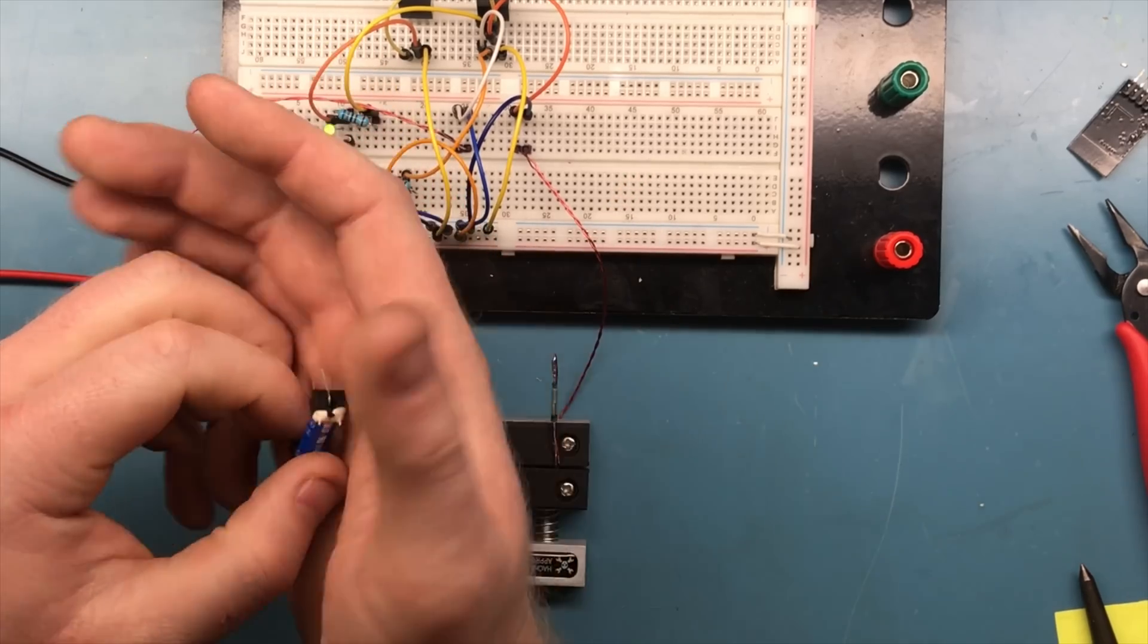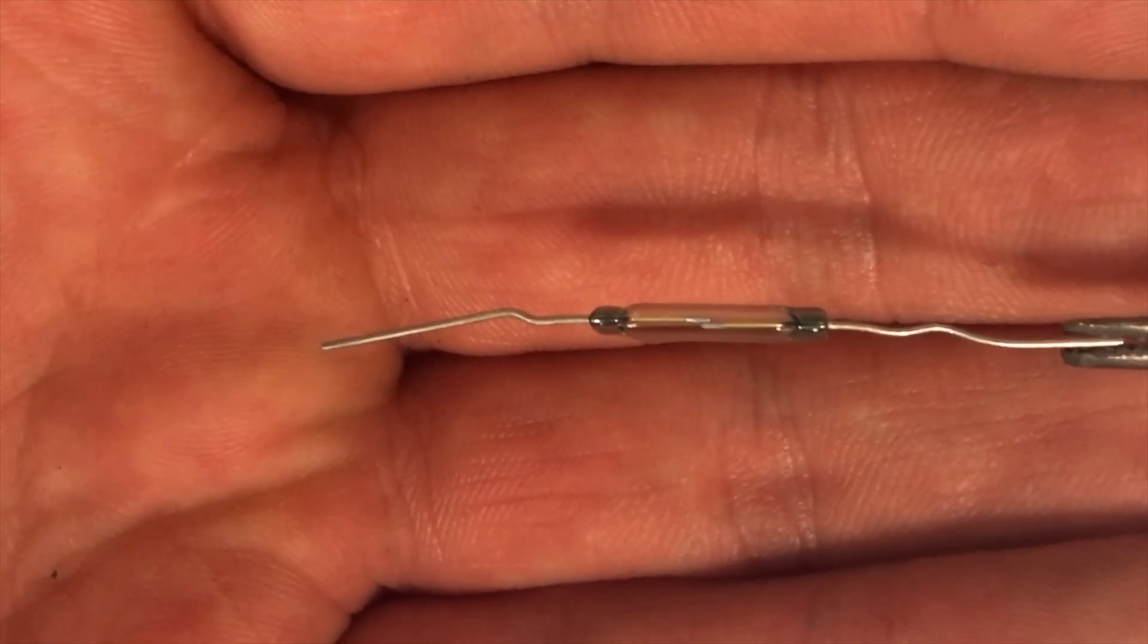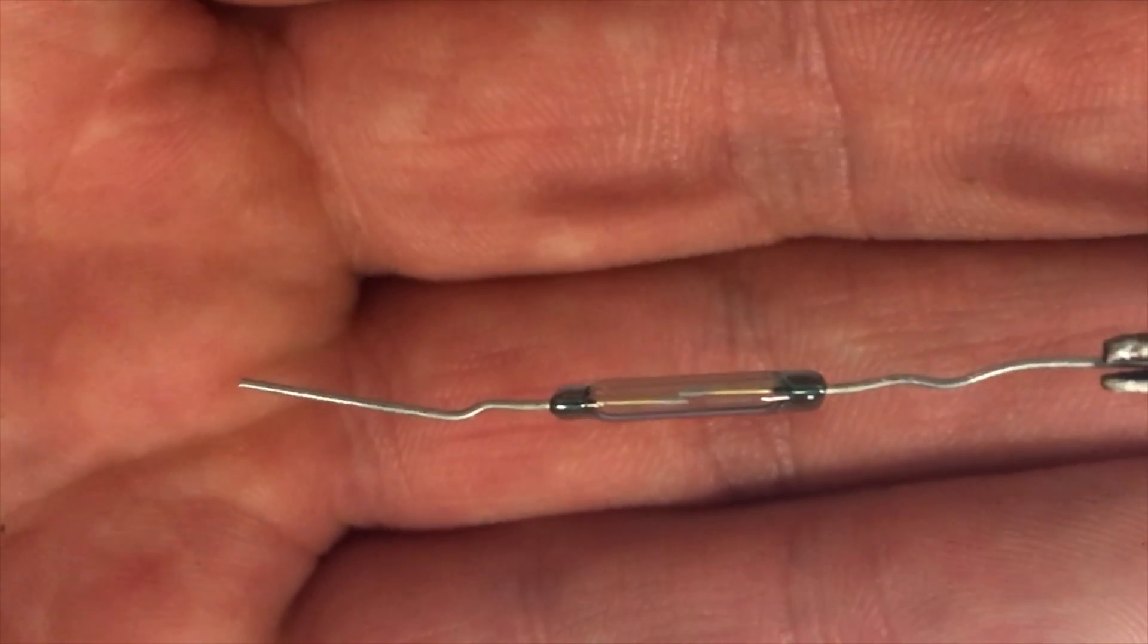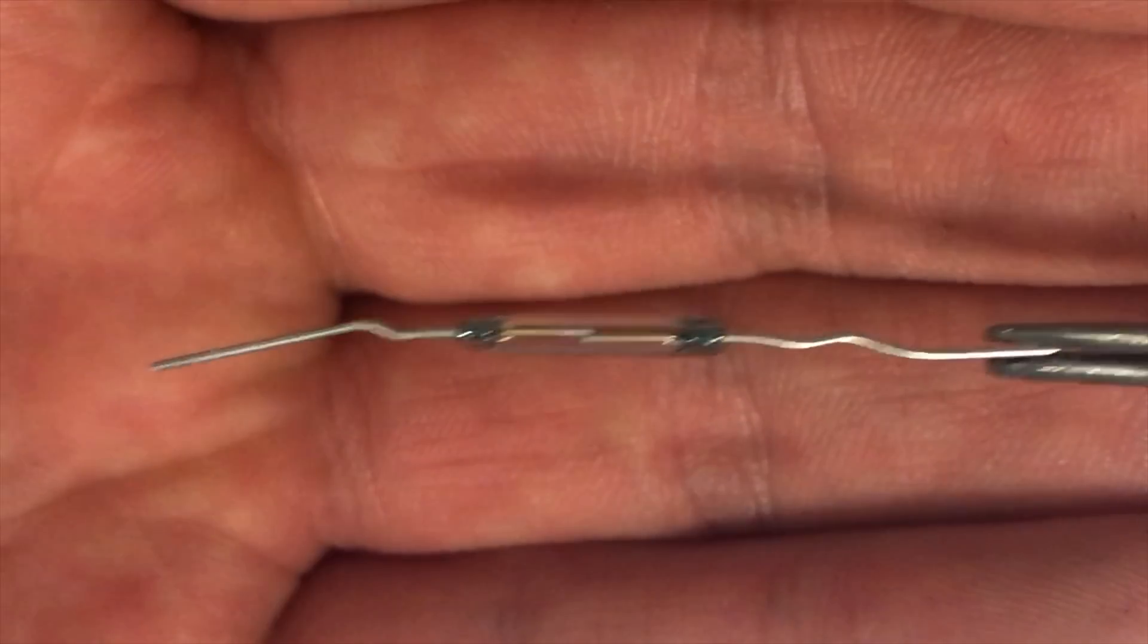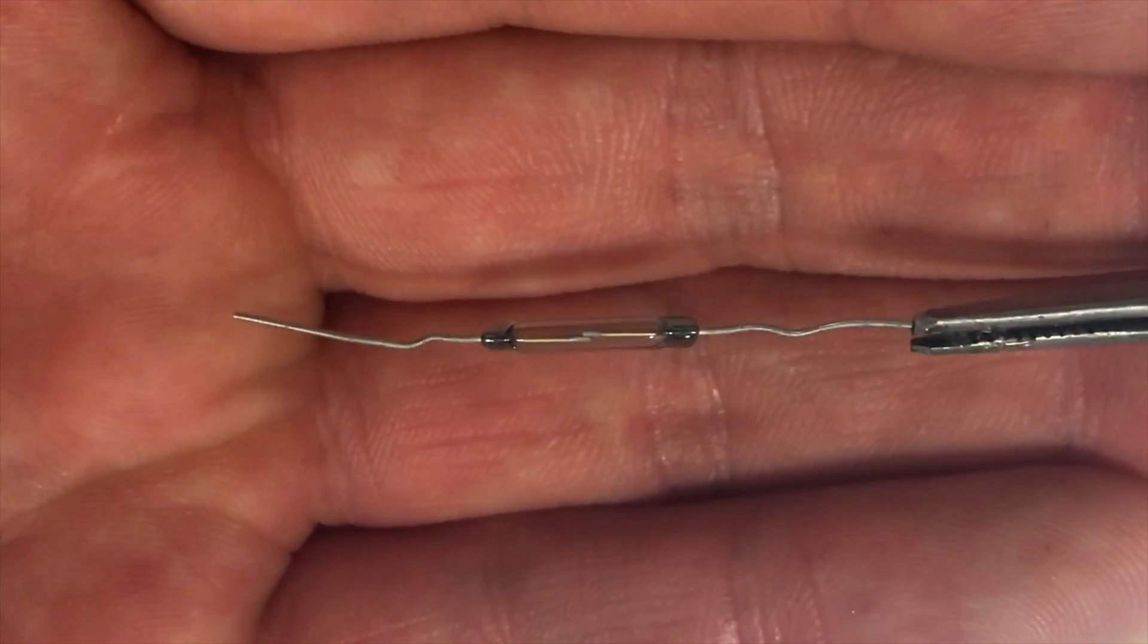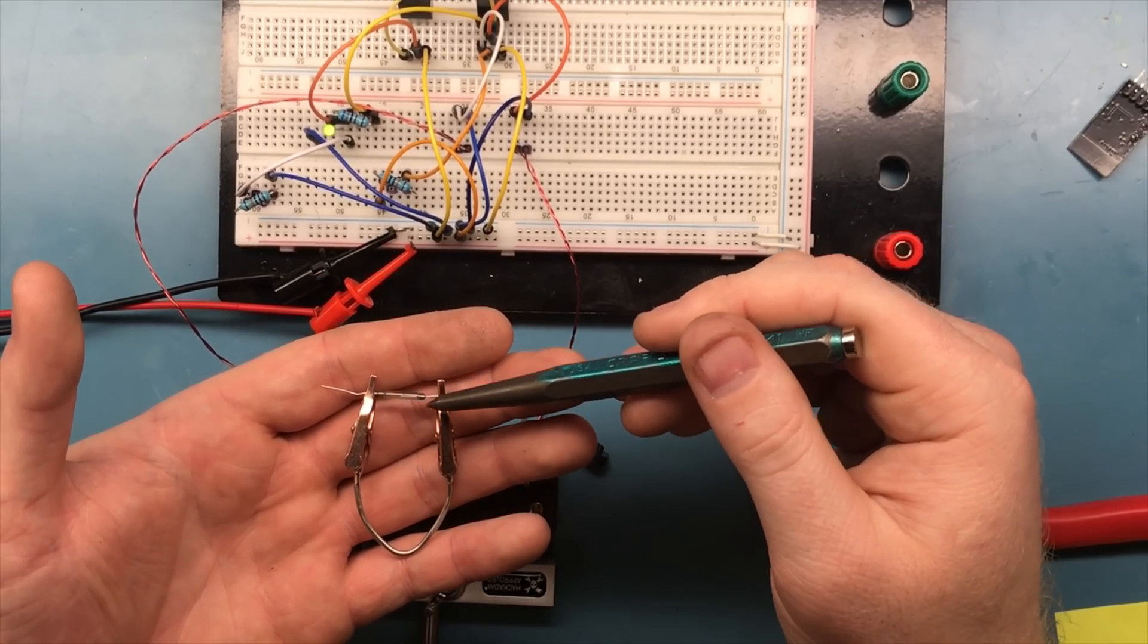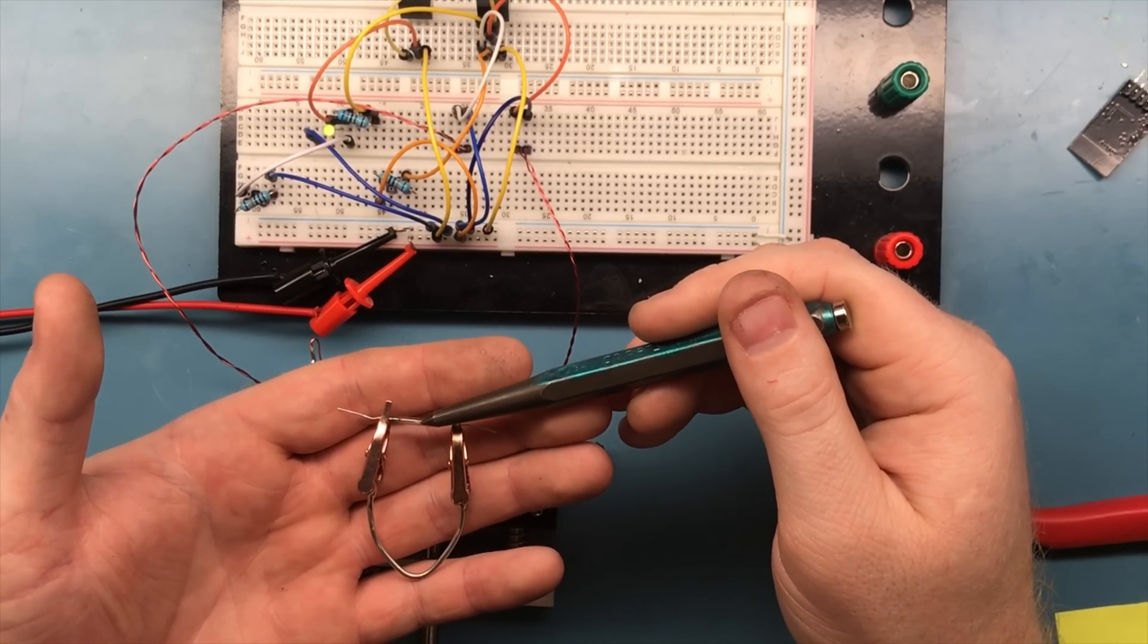A reed switch consists of two ferrous metal strips inside a sealed glass tube. When a strong enough magnetic field is introduced, the strips make contact and allow current to flow through the switch. Once the magnetic field is removed, the switch turns off. It's a good idea when soldering reed switches to give it some kind of heat sink to prevent the heat from the soldering from damaging the seal on the glass tubes.